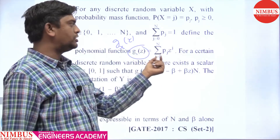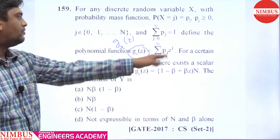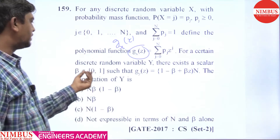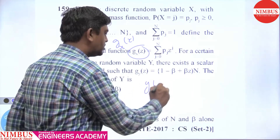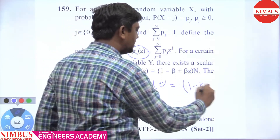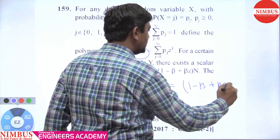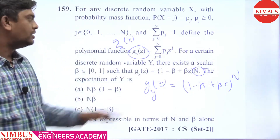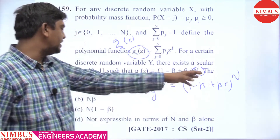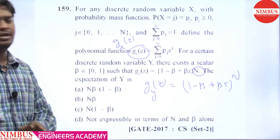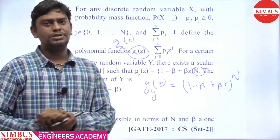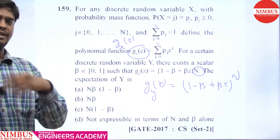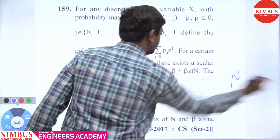The probability generating function for a discrete random variable X is given as summation j equal to 0 to n of pj into z^j. Similarly, for a certain discrete random variable Y, there exists a function with beta belonging to closed interval [0,1] such that g(z) equals (1 - beta + beta·z)^n. We need to find the expectation of Y.